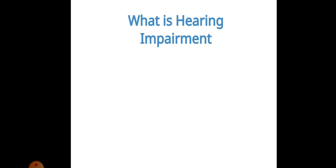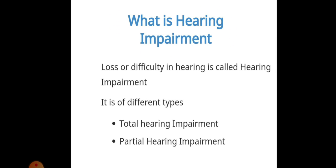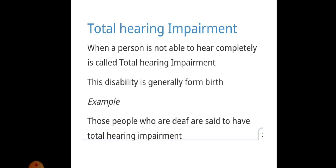What is hearing impairment? It means loss or difficulty in hearing. There are some people who have difficulty in hearing or cannot hear at all — this is called hearing impairment. It is of two types: total hearing impairment and partial hearing impairment.